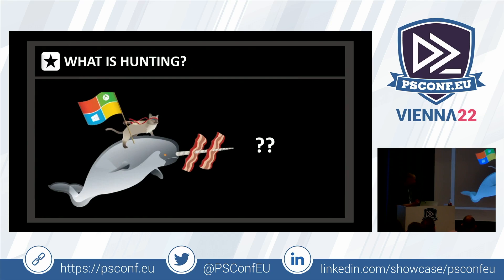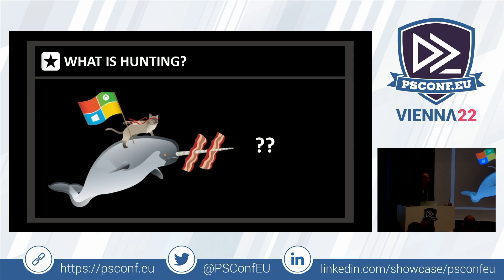So what is hunting? We try to catch the bad guys — we try to detect them. There's a slight difference between detection and hunting. Detection rules are probably large, stable, and you know the result you get. But hunting is more individual — you're on a hunch, you follow behaviors in the network, and whatever you build in hunting might become a detection rule at the end.